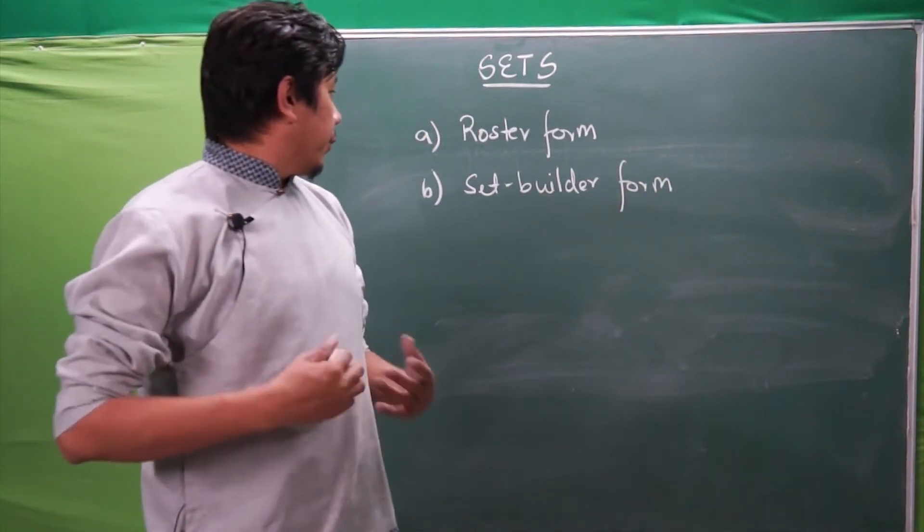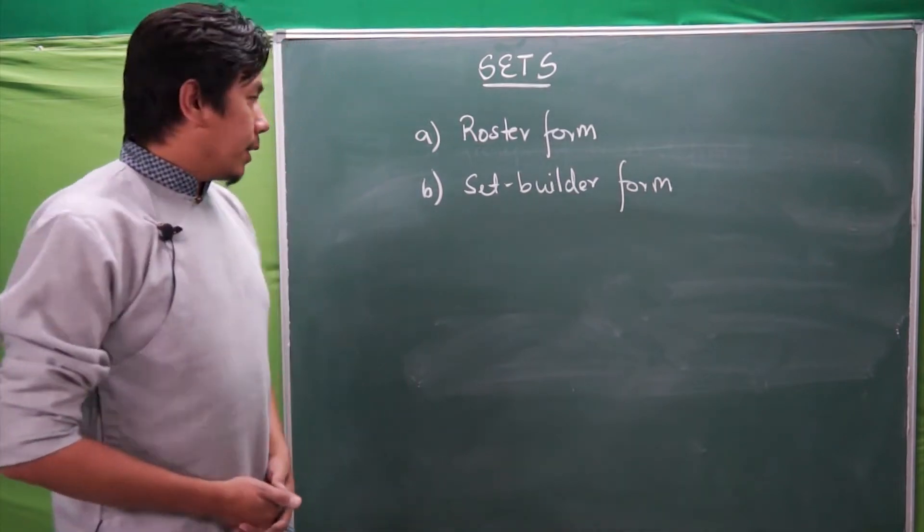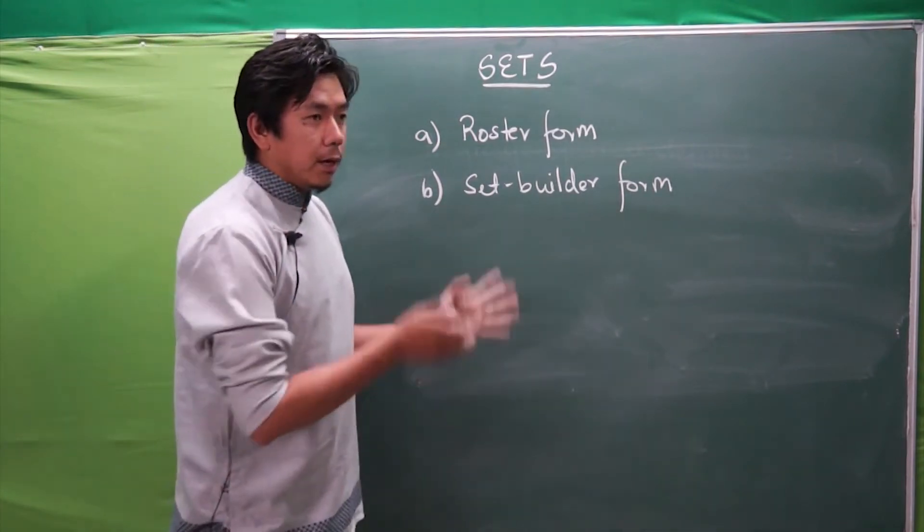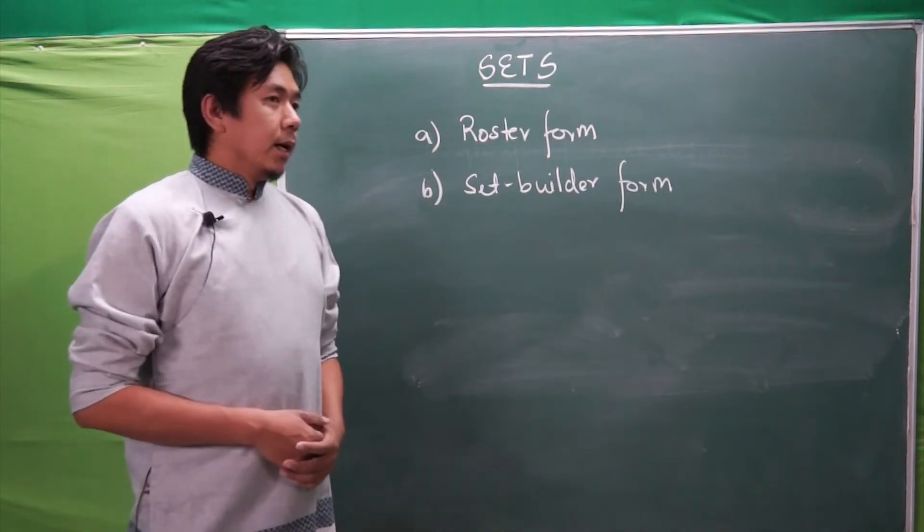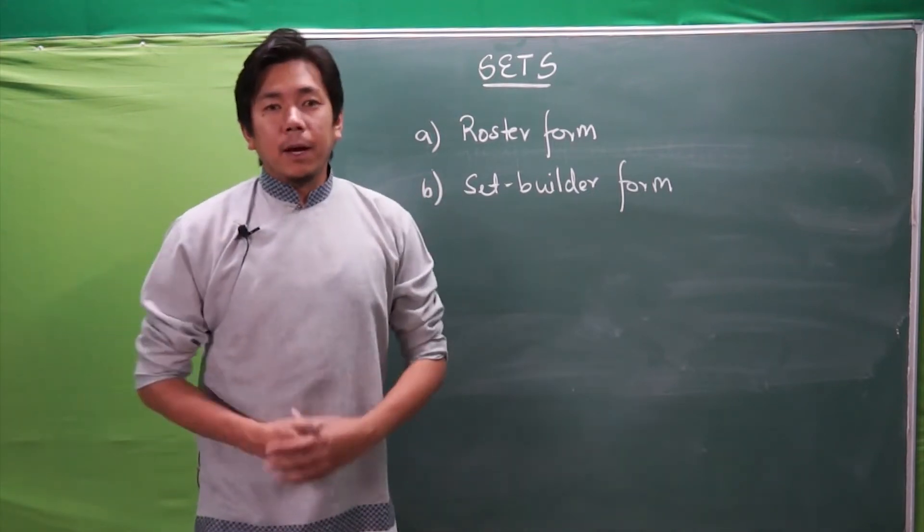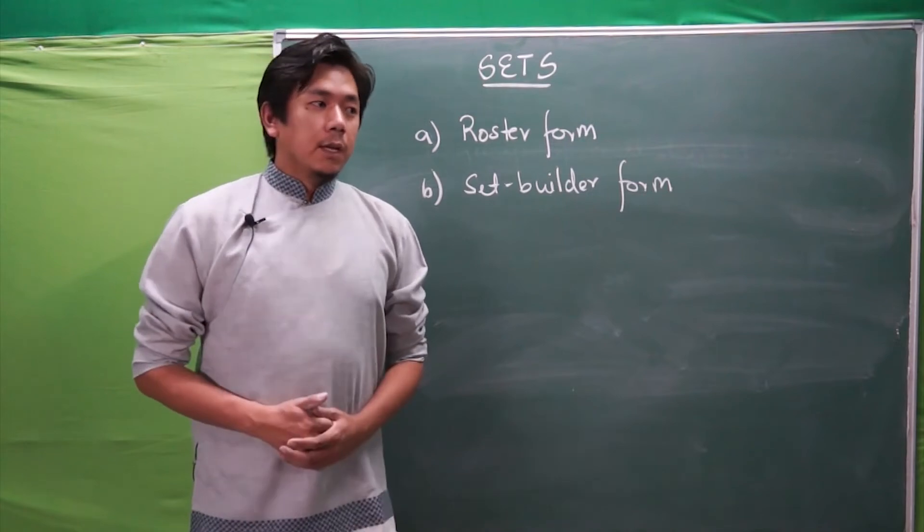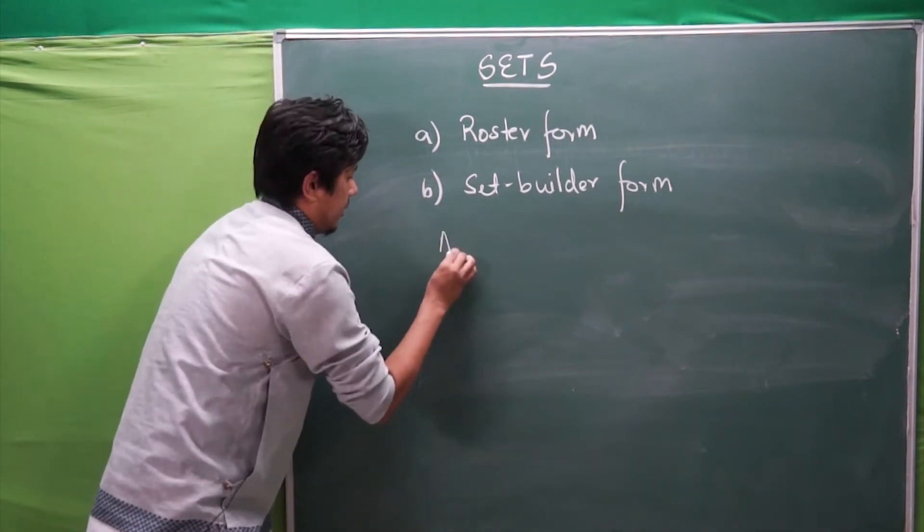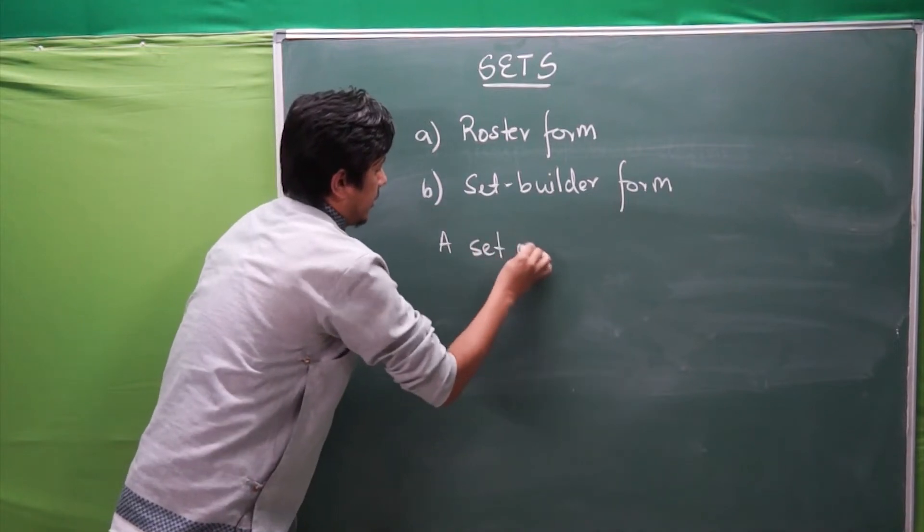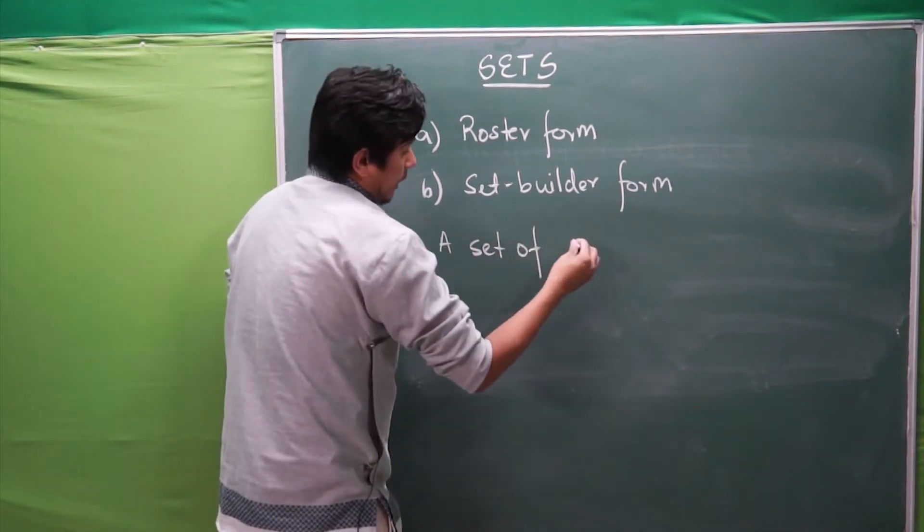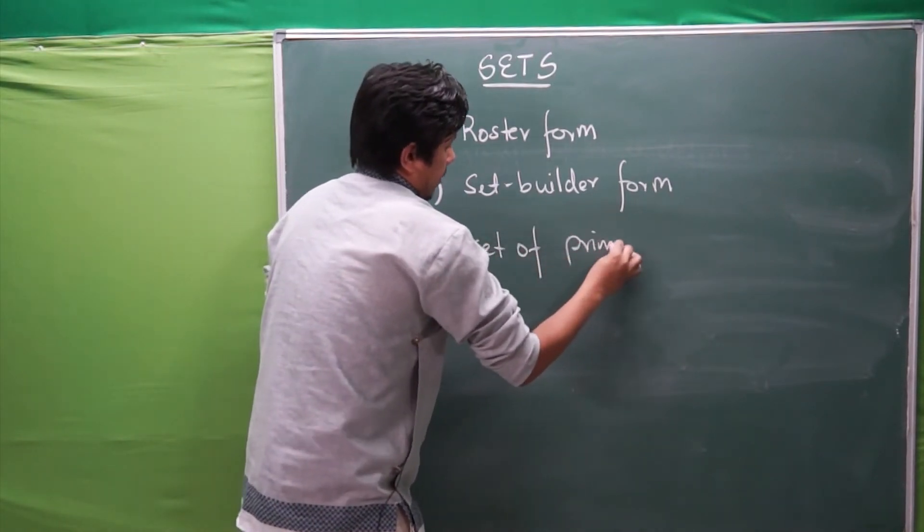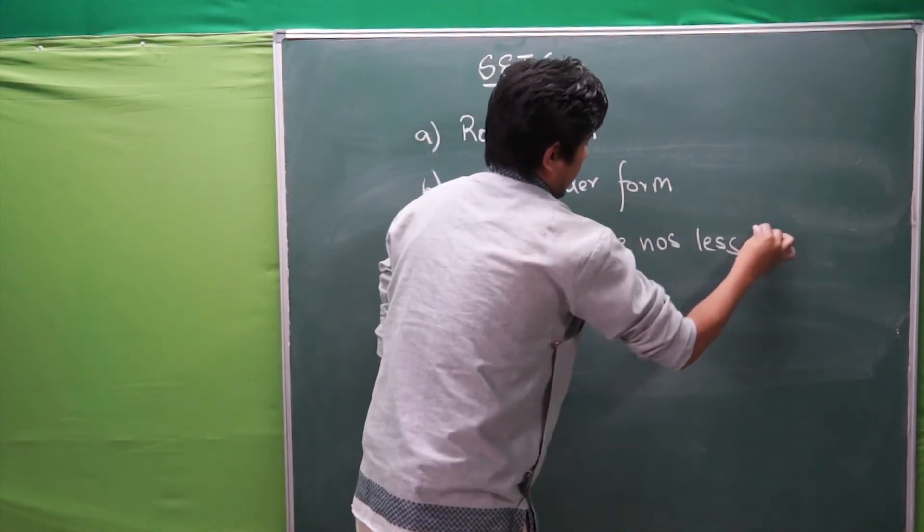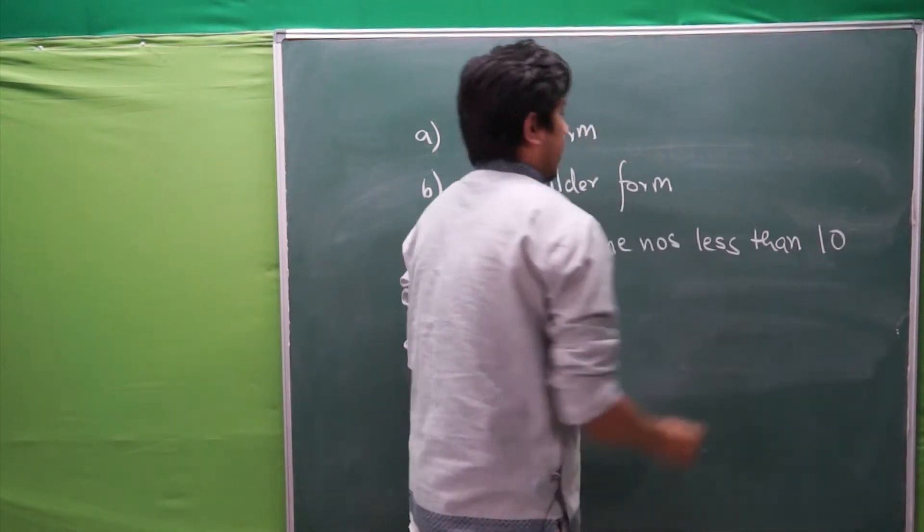By roster form, what we understand is the form that we used earlier in which all the elements are being noted out. For example, let us say set of prime numbers. A set of prime numbers less than 10.